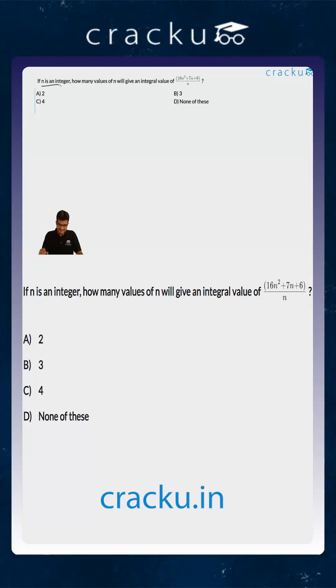In this question we are told that n is an integer and we are required to find out how many values n can take such that a given expression, which is 16n squared plus 7n plus 6 divided by n, is an integer.